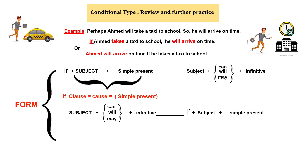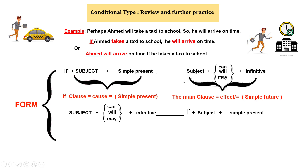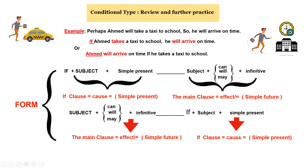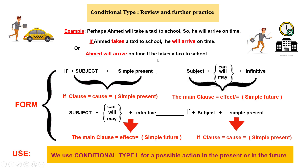One more important thing about conditional type 1 is the order. In conditional type 1, the if-sentence is what we call the if clause, and the if clause stands for the cause of the action. Then we have the main clause, which stands for the effect — the consequence or result. It is also possible to reverse this order: you can have the main clause first, which stands for the effect, then the if clause, which stands for the cause.